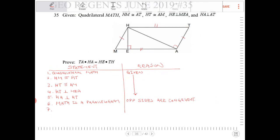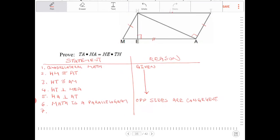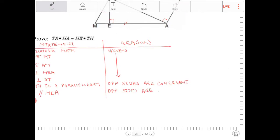Now that I know opposite sides are congruent, I also know that opposite sides are going to be parallel. So HT and AM are going to be parallel, and HM and MEA are going to be parallel — because opposite sides are parallel in a parallelogram.